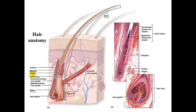Continuing with hair components: the cortex consists of flattened cells outside of the medulla that are relatively hard. Then you have the cuticle, which is a single layer of tissue surrounding the cortex itself.